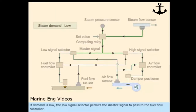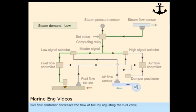If demand is low, the low signal selector permits the master signal to pass to the fuel flow controller. The fuel flow controller decreases the flow of fuel by adjusting the fuel valve. As the fuel flow decreases, the fuel flow sensor transmits the signal to the high signal selector and fuel flow controller.